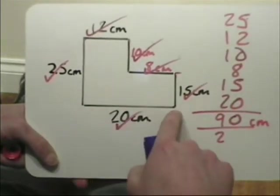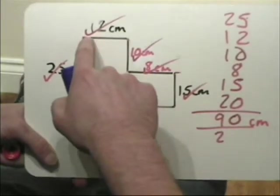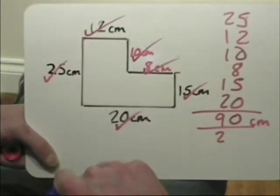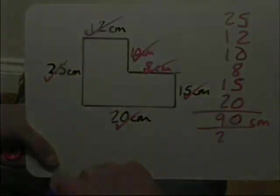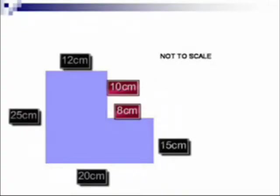The perimeter all the way around is 90 centimeters. To find the area, simply multiply the length by the width.